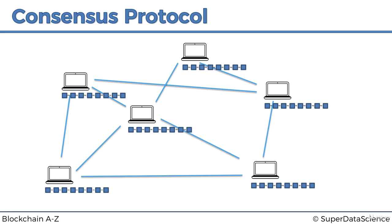As you'll recall from the Byzantine fault tolerance example, the challenge for the generals was to understand which command to follow — whether to attack or retreat. In our case, the consensus protocol for a blockchain has to solve two main challenges. Number one is protecting the network from attackers. We already talked about the situation where an attacker tries to change a block in the middle of the chain — that's almost impossible because they'd have to change all subsequent blocks on every single node.